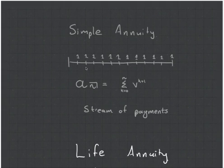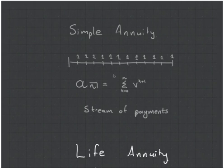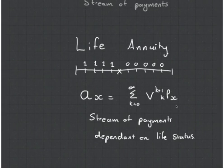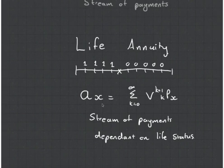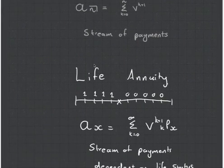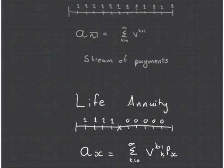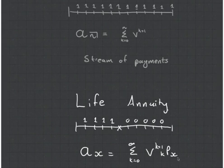What you do is you're making each payment at another interval of time, so its formula is the summation of the discount factors. Now, what is a life annuity? A life annuity is kind of the same thing, except it depends on your life status as well. You can quickly see that a life annuity will have a lower value than a simple annuity, because in the life annuity there's this additional term called kPx, which is the survival probability. Survival probabilities are always less than 1, so when you're multiplying something less than 1 to the discount factor — which is also always less than 1 — you're going to get a value smaller.